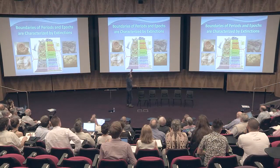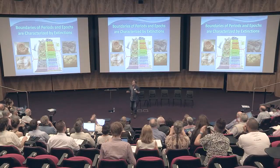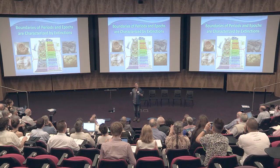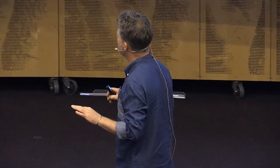Boundaries of periods and epochs, as you've heard, are set by chemical signals - golden spikes that you can see in depositional layers. But I am zoocentric because I'm a biologist, and so to me what these layers represent is extinctions of organisms.